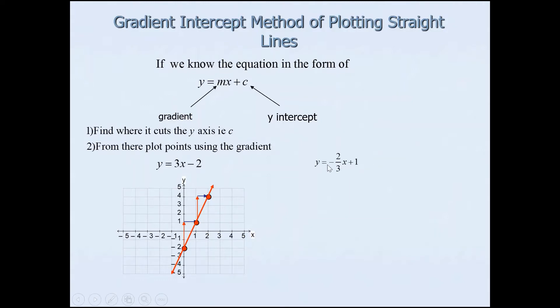Next example here so be careful here it says negative 2 thirds. So let's try and do this one using this method. So first things first you need to identify the y intercept. So y intercept here is positive 1 and the gradient of course is negative 2 thirds. So what I'll do is I'll quickly mark point the y intercept as 1 and then we'll start tracing. Now in this case it's negative 2 so that means it has to go two steps down and three across.